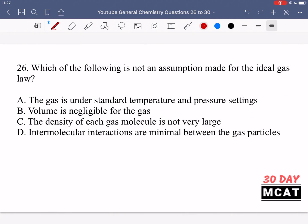In question 26 we're asked which of the following is not an assumption made for ideal gas law. So for the ideal gas law we have some assumptions that are made, which one is not an assumption. Option A is saying the gas is under standard temperature and pressure settings. This is not an assumption, so A is the correct answer.